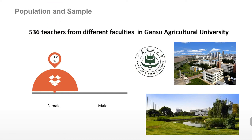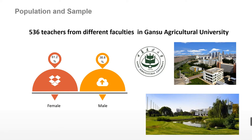In this study, a self-report questionnaire and an interview were used to collect data. The survey was completed by a sample of 536 teacher-researchers who worked in different faculties in Gansu Agricultural University in China. On the right side you can see some views of their campus, and on the left side you can see the gender distribution of the sample.